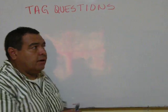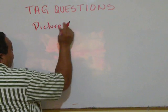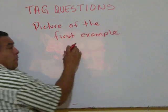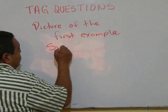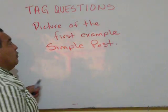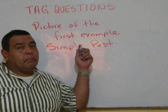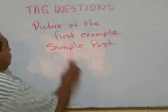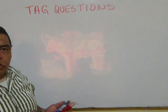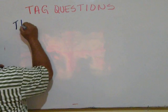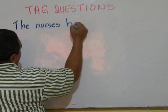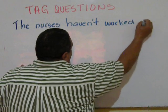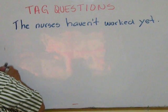For the homework you have to attach a picture of the first example I used for the simple past. You have to write down the first example I used, and a picture of this exercise that I am going to do right now.